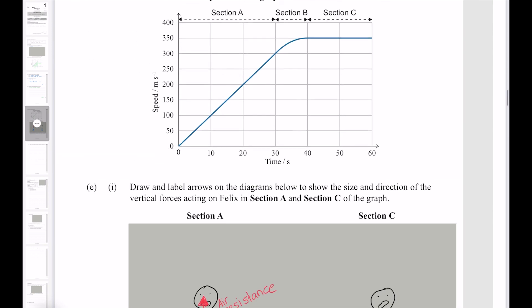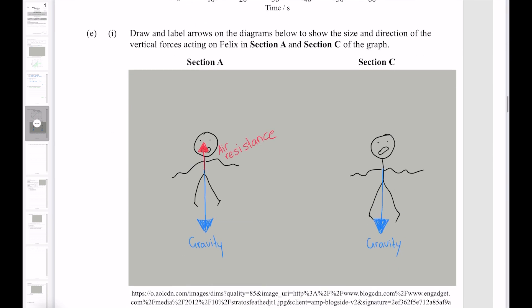Now in section C, we don't have any acceleration. The velocity, the speed is constant. What that means is that the forces must be balanced. Meaning that the size of the air resistance is the same size as gravity. They are equal and they are opposite.